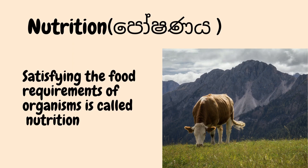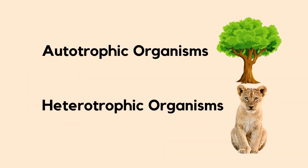Next we'll talk about nutrition. It is the satisfying of the food requirements of organisms. According to the mode of nutrition, we can classify organisms as autotrophic organisms and heterotrophic organisms.